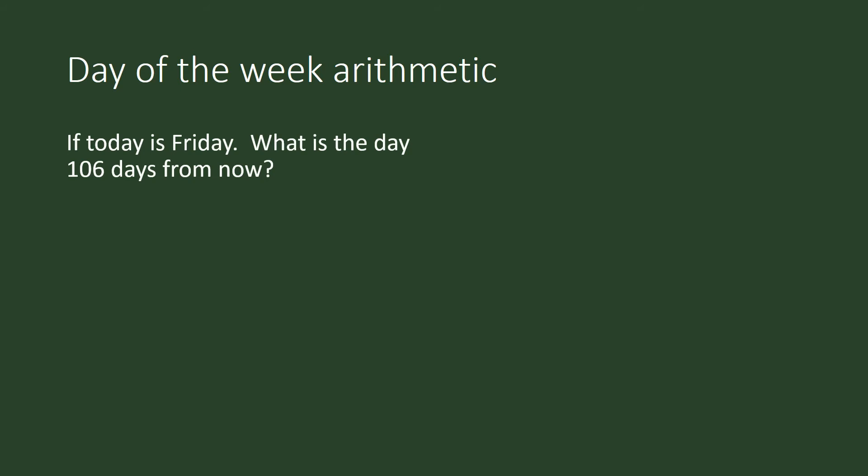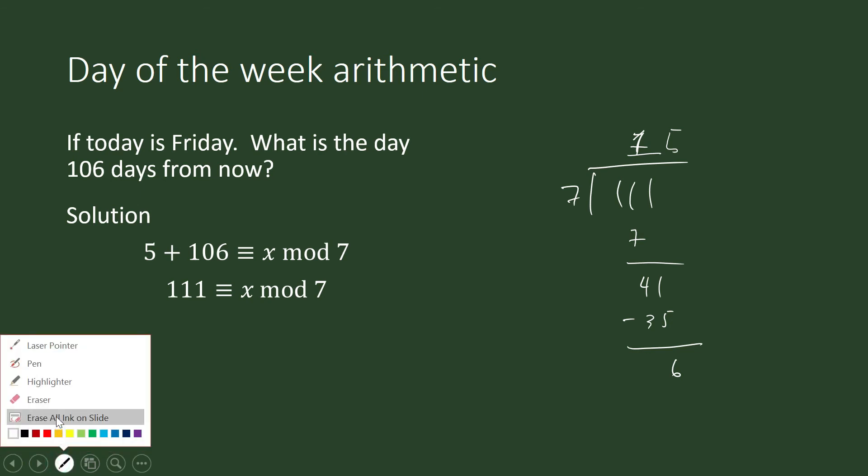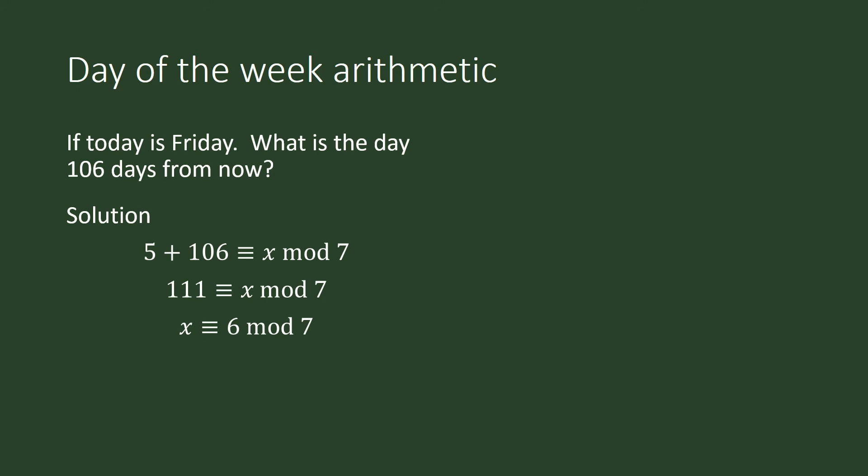If today is Friday, what is the day 106 from now? So Friday is our day 5. And we will add 106 days. What is that congruent to under modulo 7? So what we do is we add 5 plus 106, which is 111. And then when we divide 111 by 7, we have a remainder of 6. So 111 is congruent to 6 modulo 7. And 6 is a Saturday. So it's going to be Saturday. If today is Friday, 106 from today is going to be a Saturday.